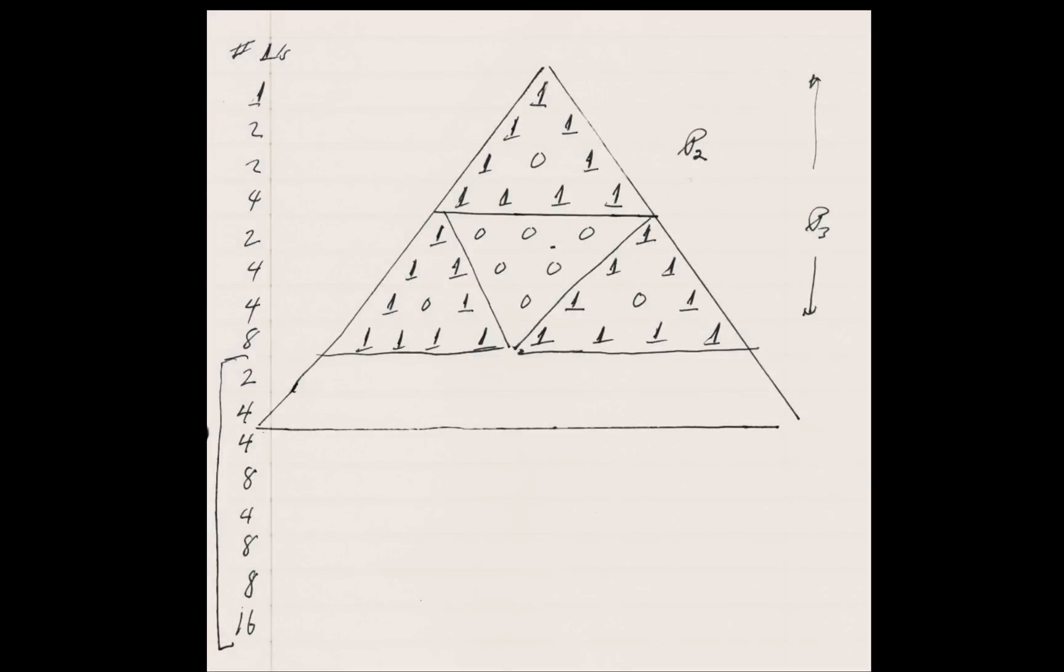The rows of Pascal's triangle are indexed starting at 0. So what I'm labeling as p_2 in this image is the first row 0 through 3. And in general, p_n will be the rows from 0 through 2^n - 1. So the first 2^n rows.